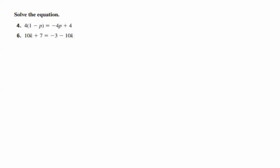In number 4, we have an equation. We'll start off by rewriting it. 4 times 1 minus p is equal to negative 4p plus 4. When I distribute on the left, I'm going to get 4 minus 4p, and on the right, negative 4p plus 4. Sorry, on the left side I had to distribute the 4 to the 1, and I also had to distribute the 4 to the negative p, so that gave me 4 minus 4p.